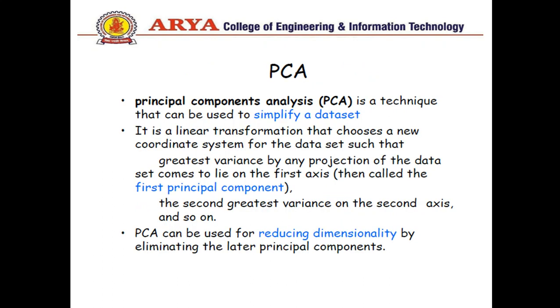Principal Component Analysis is a technique used to simplify a data set. PCA is an unsupervised non-parametric statistical technique primarily used for dimensionality reduction in machine learning. It is a linear transformation that chooses a new coordinate system for the data set such that greatest variance by any projection comes to lie on the first axis.